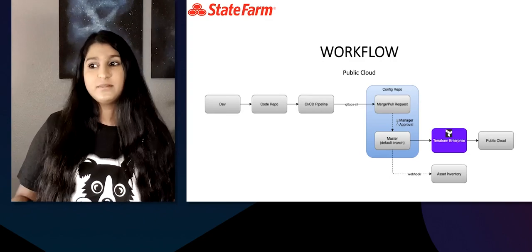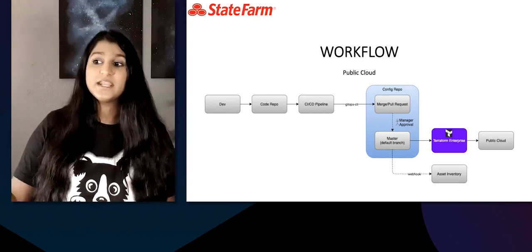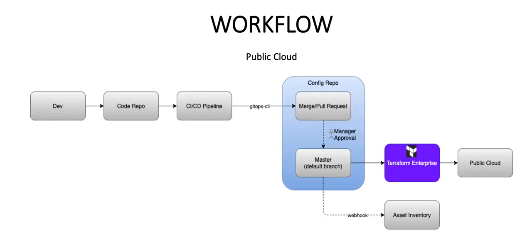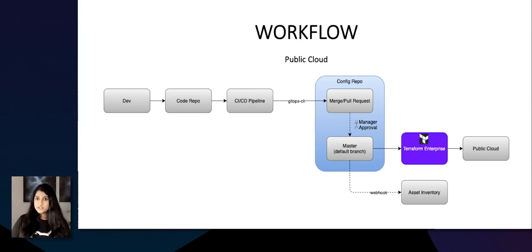Lastly, we have our public cloud workflow. Again, this one is the exact same up to the config repo. But here you see the integration of Terraform Enterprise — instead of Flux or pipelines, we're using Terraform Enterprise. If your deployment is as simple as a Terraform plan and apply, you can make use of the VCS integration in TFE. When something is put into master, it kicks off an external pipeline that runs a Terraform plan and apply in TFE — so in that way, it acts like Flux. You can also take advantage of the CLI and API if you don't want to use the VCS integration, and you can still do an external pipeline that kicks off a pipeline in TFE.